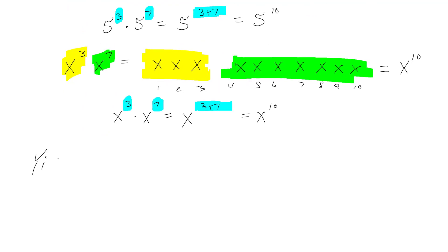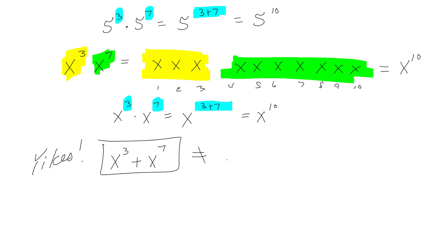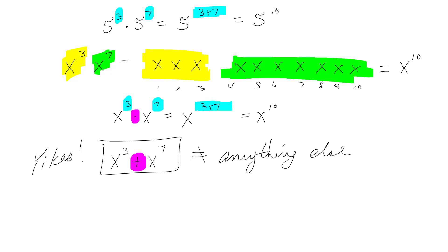Something really important: this — x cubed plus x to the seventh — we're done, there's nothing we can do with it. It's not equal to anything simpler, because it's connected with a plus sign. The only reason we're able to simplify when it's multiplication is because of that multiplication symbol. If you're just adding two terms together, we're not going to combine the exponents. We only combine exponents when we're actually multiplying.